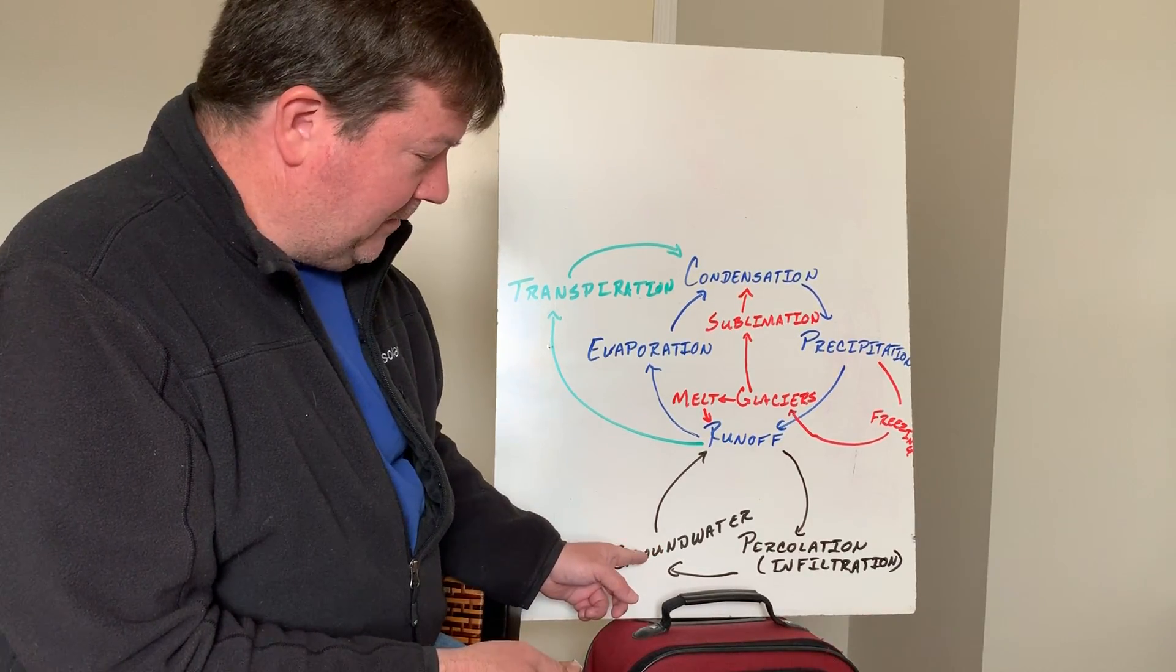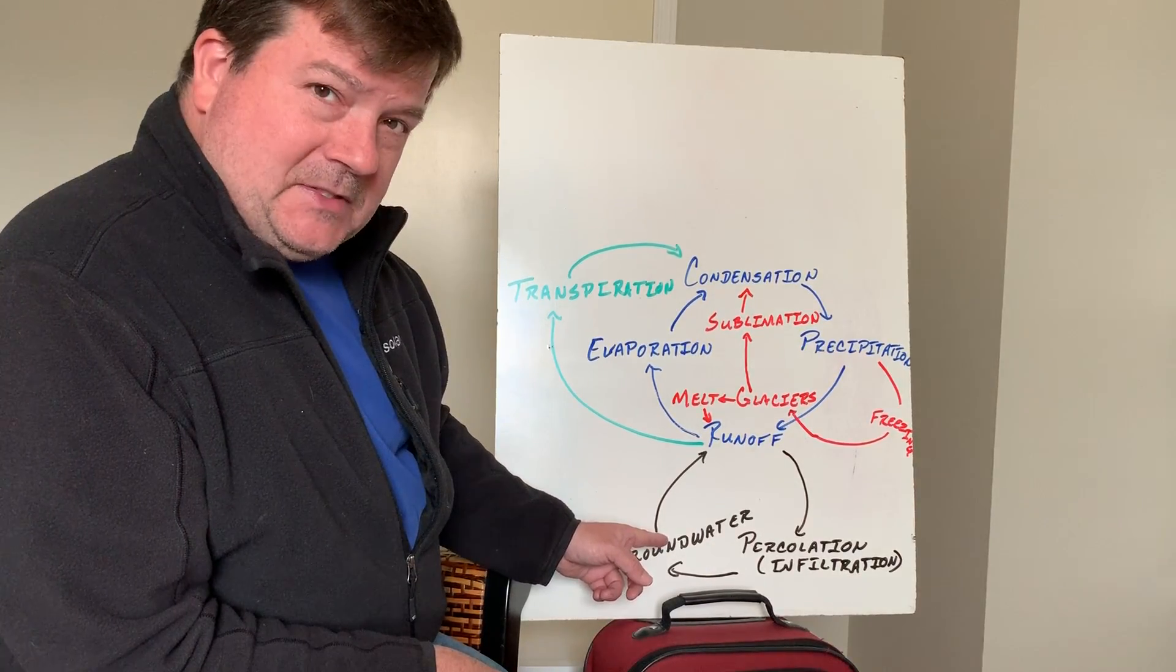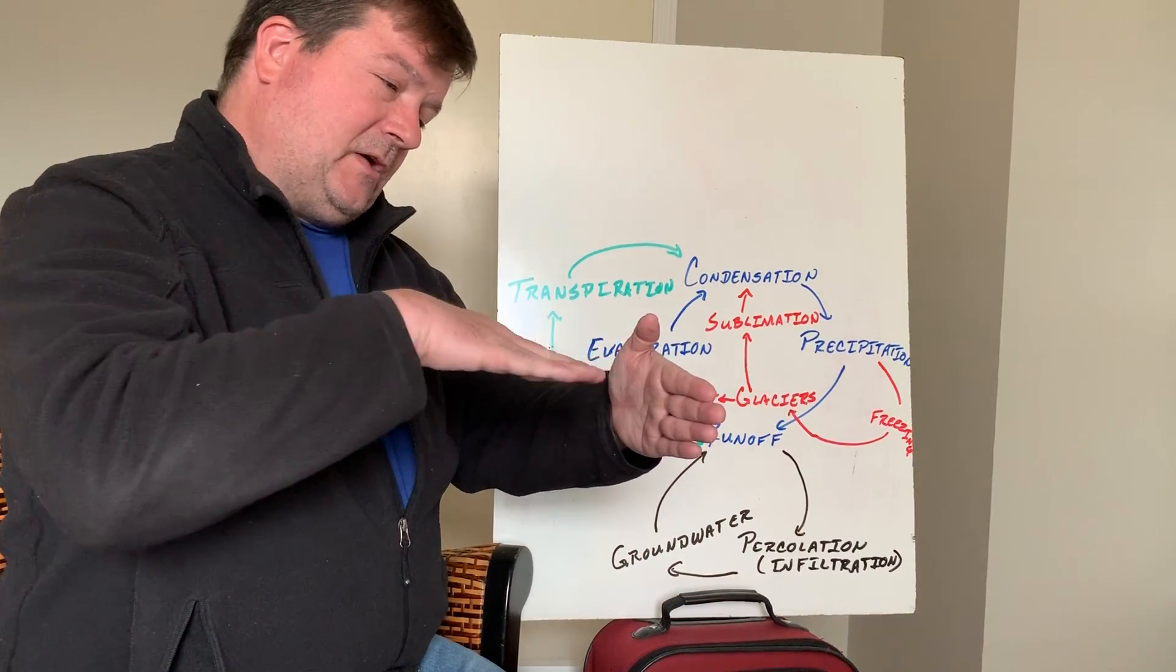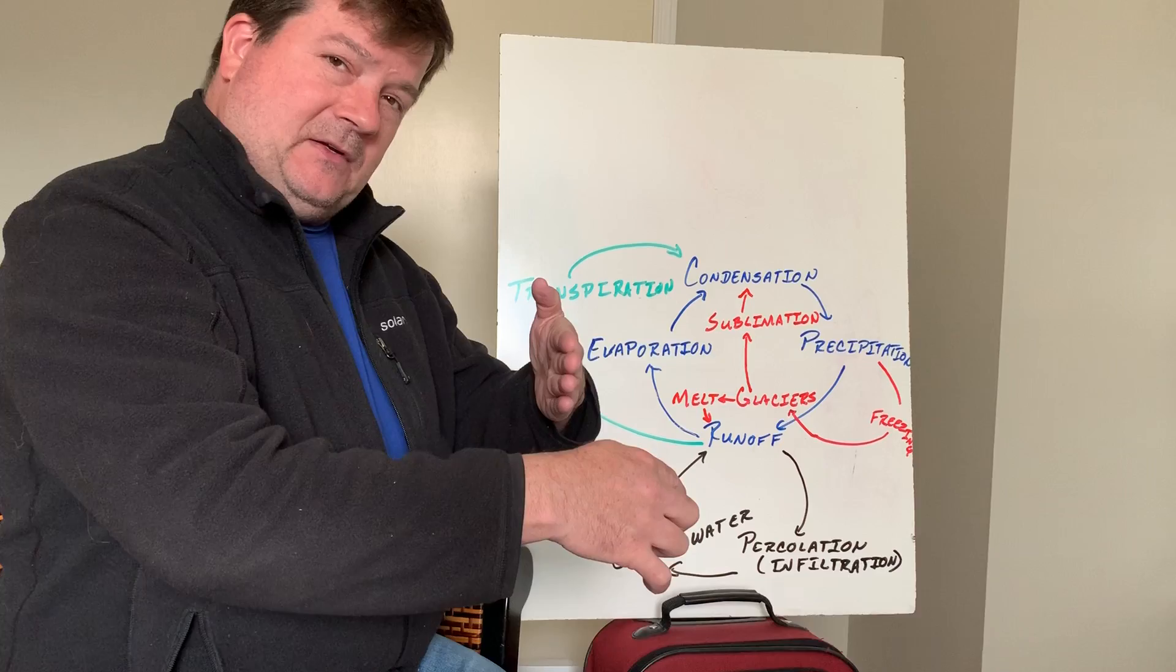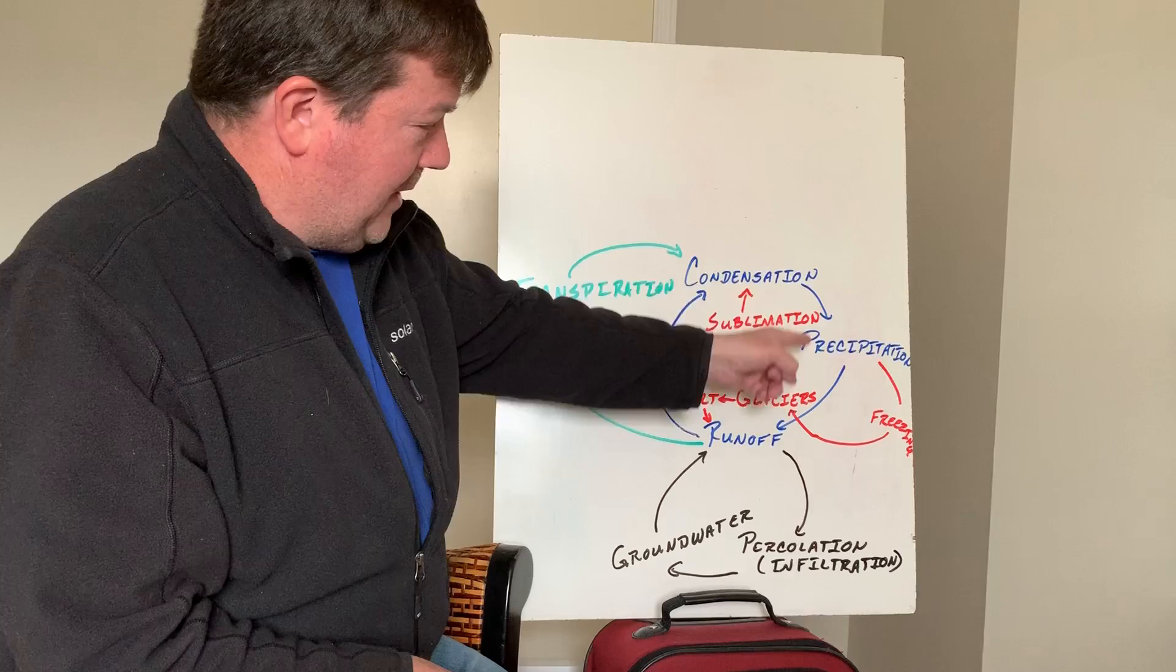Then groundwater is either pumped up from a well, or where it runs into a place on the landscape where like you have a cliff and the water table's right here on the other side of the cliff, that water pours out and that's called a spring and it becomes runoff again and it can get back into this basic water cycle.